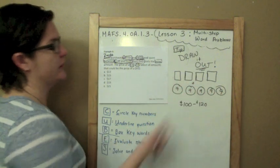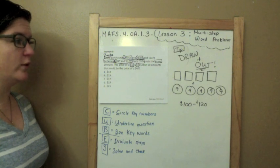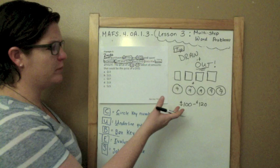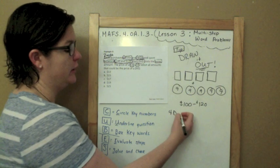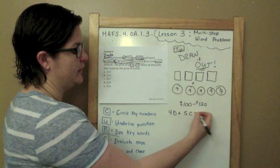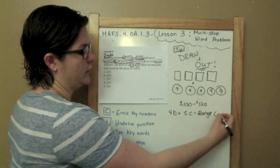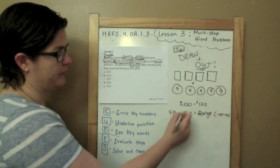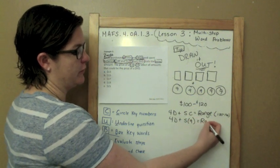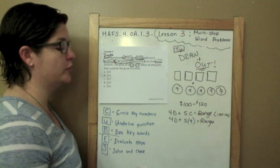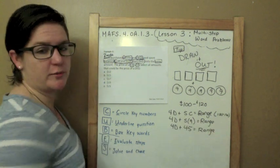Select all amounts that could be the price of a DVD. For this one, because they give us answers, let's plug them in and see if they work. Let's represent this using numbers as well as pictures. I have 4D plus 5 CDs equals between $100 to $120. We know that there are 5 CDs and each costs $9, which equals my range. 4 DVDs plus $45 equals my range because I multiplied 5 times 9.